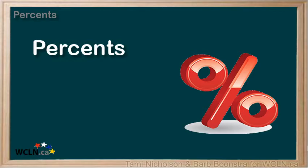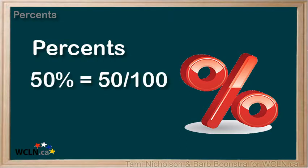A percent is a special type of ratio. You can think of percent as meaning out of 100. For example, 50% means 50 out of 100, which is the same as a half.